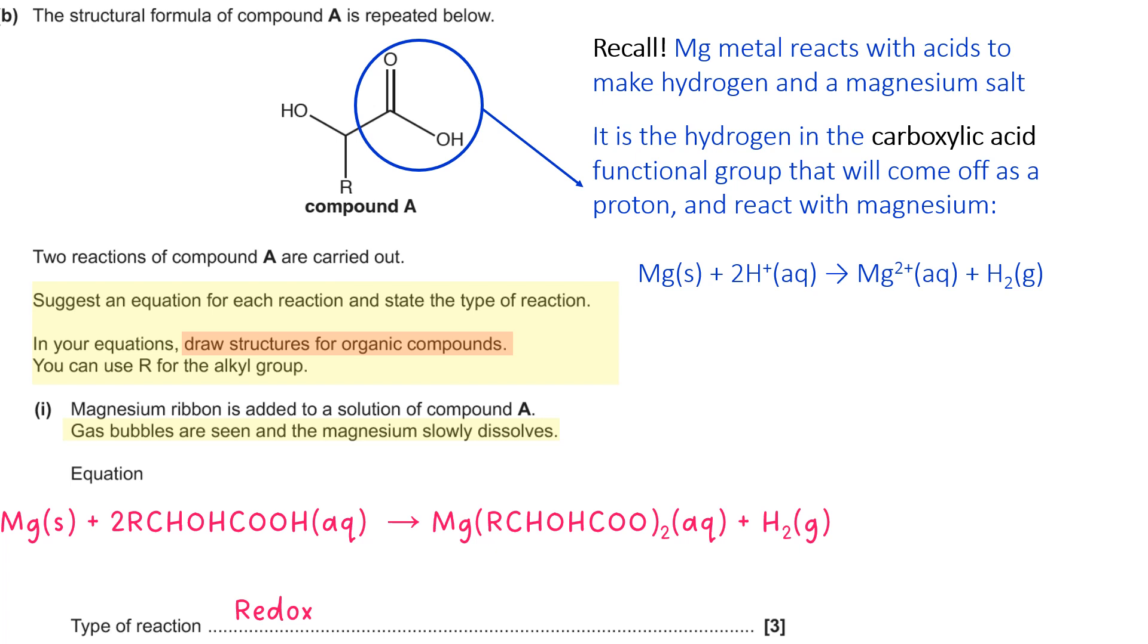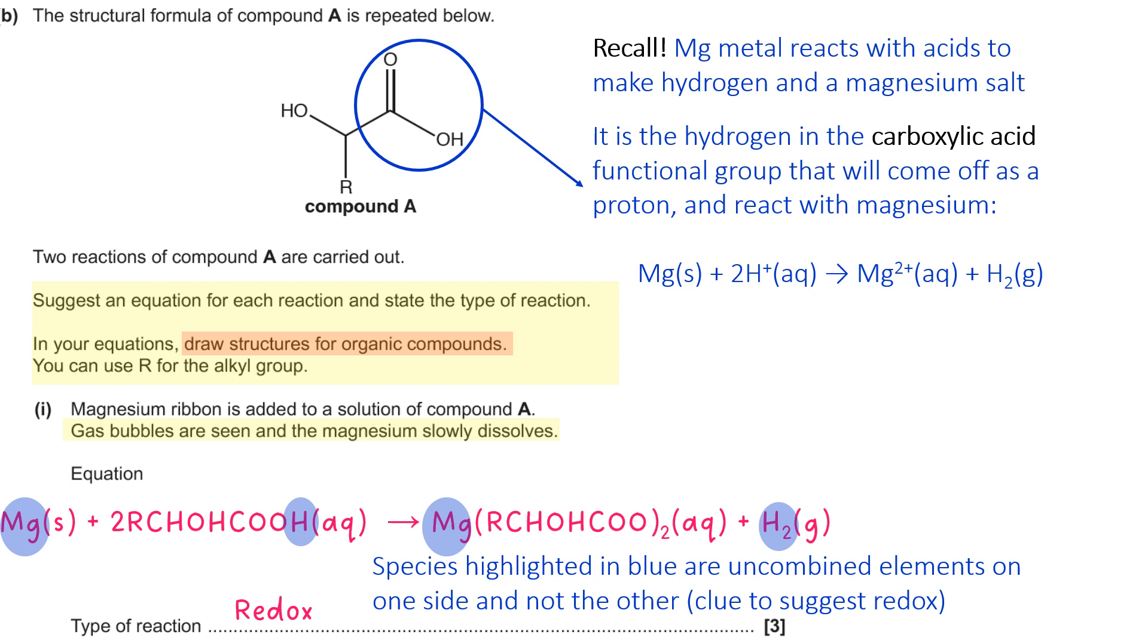Now, why did I put redox as the type of reaction? Well, you could, if you wanted to, go and put oxidation numbers next to everything and work it through. But a good way of shortcutting that is to see if you have uncombined elements on either side. So for example, the magnesium is uncombined on the left, but it's combined on the right. And the hydrogen, that's combined on the left, but uncombined on the right. So that generally tells you that redox is going on. So it's not an acid-base reaction because it's not magnesium hydroxide or magnesium carbonate. It's magnesium metal. So it might be tempting to put an acid-base reaction or a neutralization because it's an acid that's reacting. But don't forget that acids react with metals as well. That's why I said at the top, maybe to recall that idea from year one.